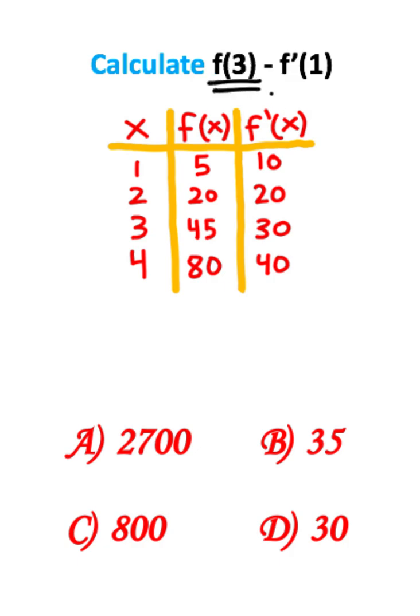I'm first going to evaluate f of three. So I can go to my function f of x, and I can find where x equals three. If I look at this row in this column, we end up at 45.